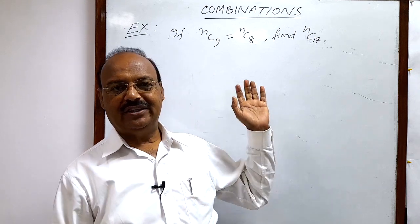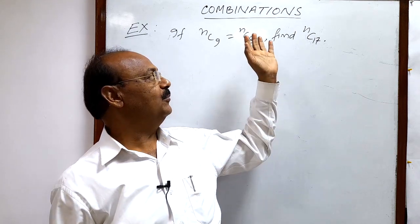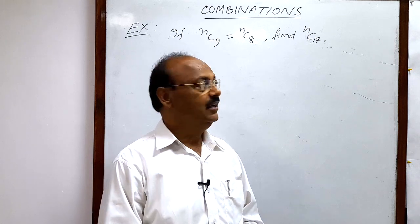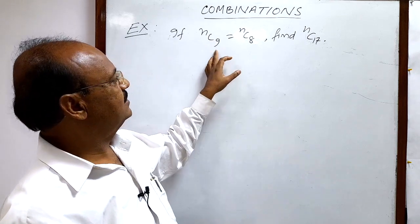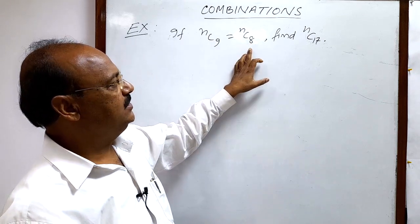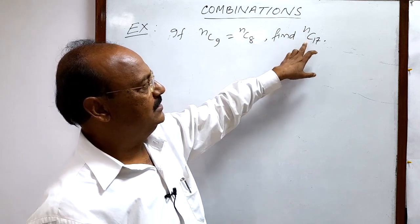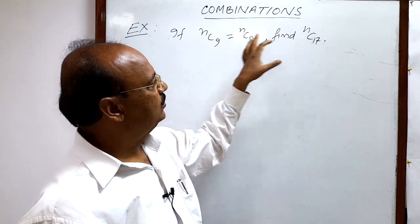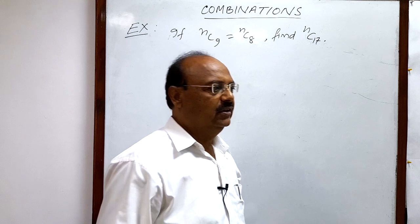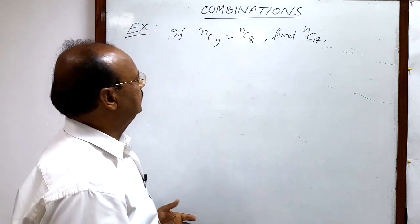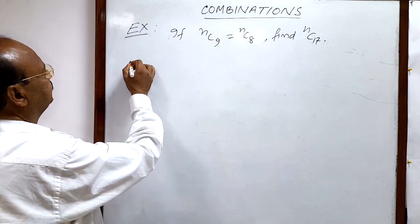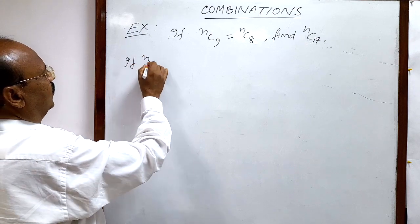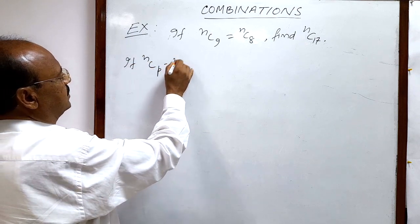Welcome students, let us see a question from the topic of combinations. The question is: if nC9 is equal to nC8, find nC17. For this question, we should recall this result: that if nCp is equal to nCq...